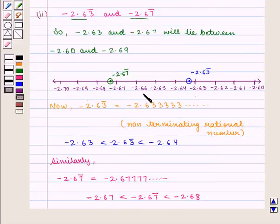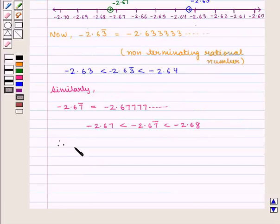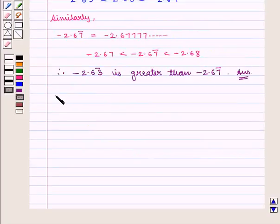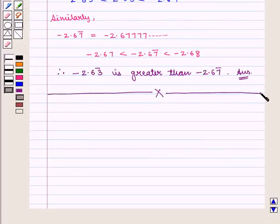Now from the graph we notice that minus of 2.63 bar is to the right of minus of 2.67 bar. Therefore, minus of 2.63 bar is greater than minus of 2.67 bar. This is the required answer. This completes our session. Hope you enjoyed this session. Thank you.